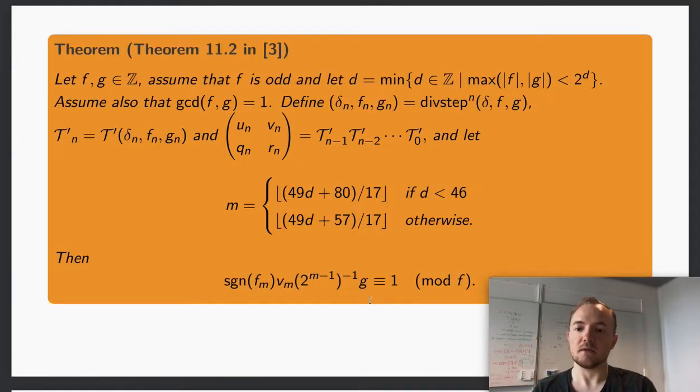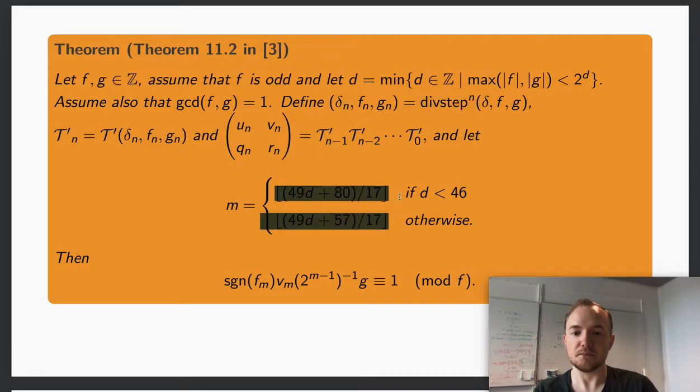Here's the correctness theorem for the algorithm. As you can see, you have to compute this divstep n times where n is defined by this number. So this is basically a loop that you have to compute, and then you have to do some multiplications.